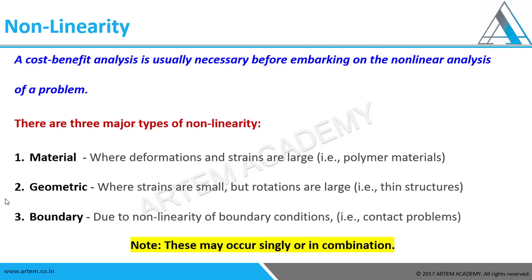The second type is geometric non-linearity, where the strains are small but rotations are large — that is, thin structures. The best example for geometric non-linearity is a fishing rod: when a fish is caught, the rod bends with very high rotations but smaller strains.